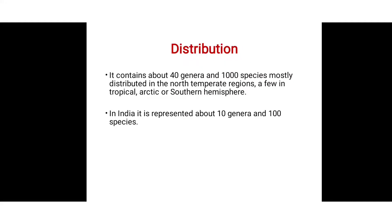First, we discuss the distribution and habitat. Polygonaceae contains about 40 genera and 1,000 species, mostly distributed in the north temperate region and a few in the tropical or southern hemisphere region. In India, 10 genera out of 40 genera and 100 species out of 1,000 species occur in our country.